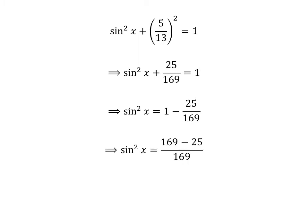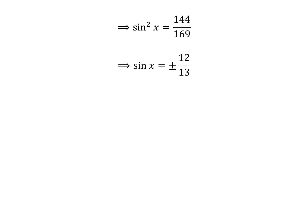Further arithmetic gives us square of sine of x is equal to 144 upon 169. Taking the square root of both sides of the above equation gives us sine of x is equal to plus or minus 12 upon 13.